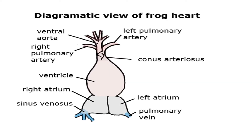This is the heart of a frog. The amphibian heart is three-chambered — as you can see here, right atrium, left atrium, and a single-chambered ventricle, which is not divided as in a mammalian heart. This right atrium receives deoxygenated blood from the sinus venosus, and this left atrium receives oxygenated blood from the pulmonary vein, with blood coming from the lungs.